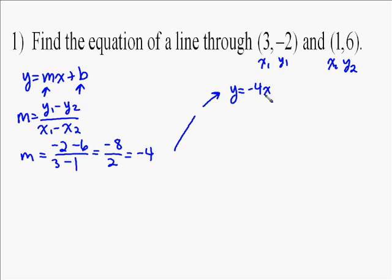Now we plug negative 4 into our y equals mx plus b for slope, because that's what we calculated. So you get y equals negative 4x plus b.